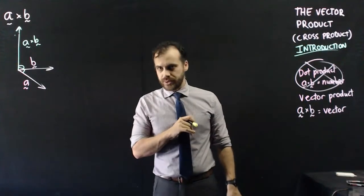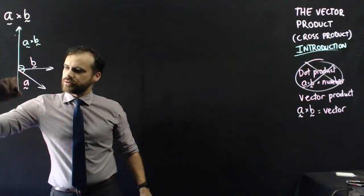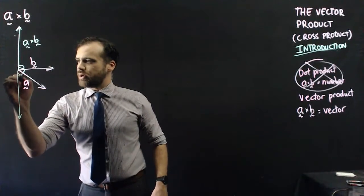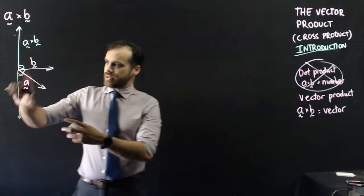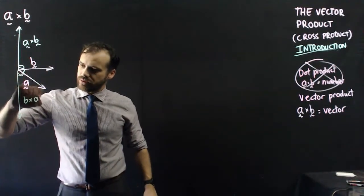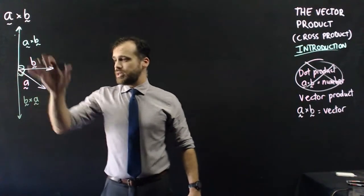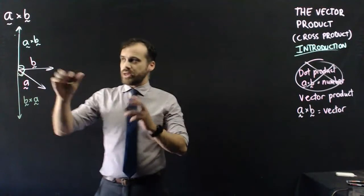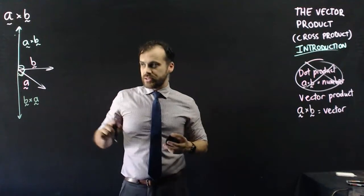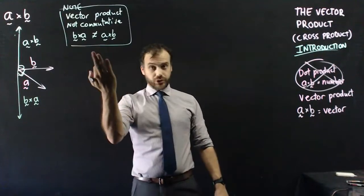There is another vector that goes down here, also creating a right angle with both A and B, and this vector has the same length as the upward one. That vector is B times A. That's really weird — you would expect that A times B and B times A are the same. But under vectors, multiplication — the vector product — is not commutative.